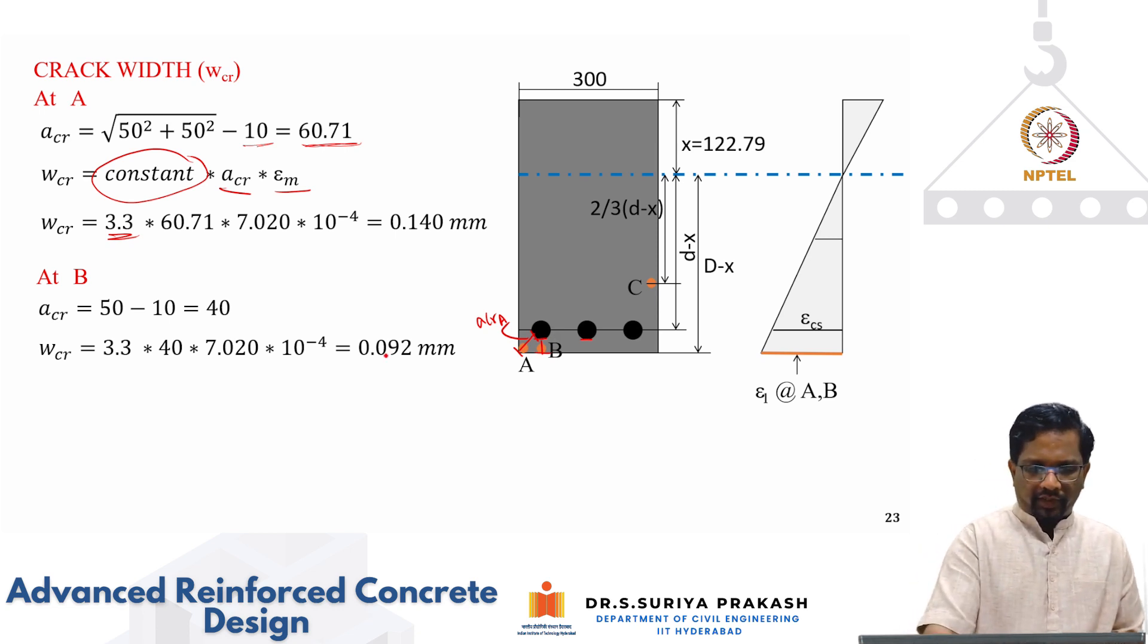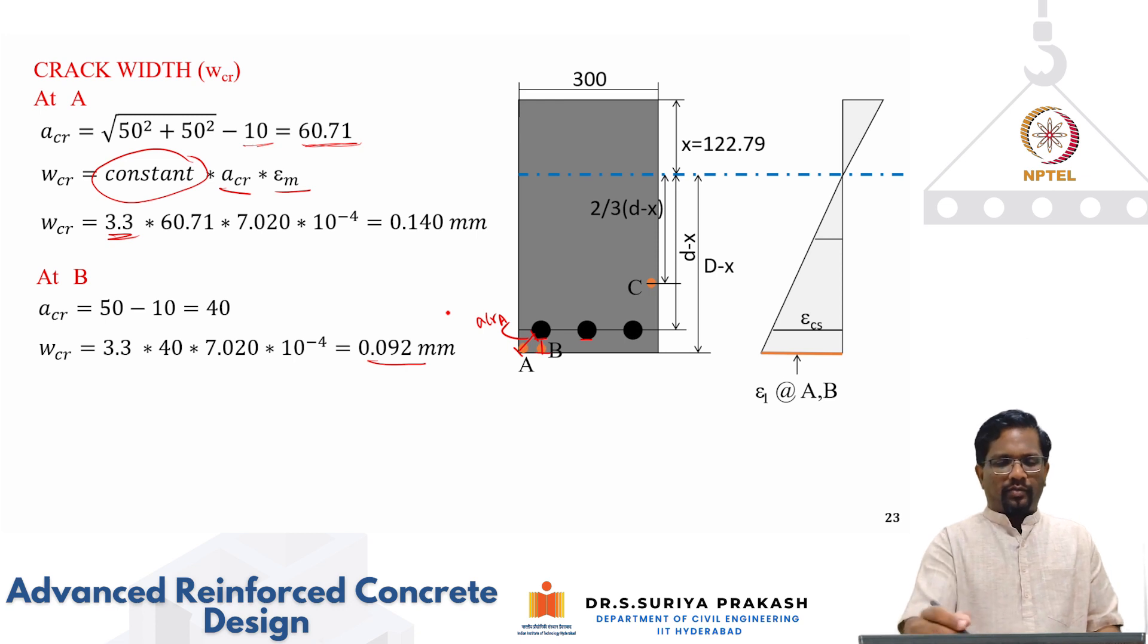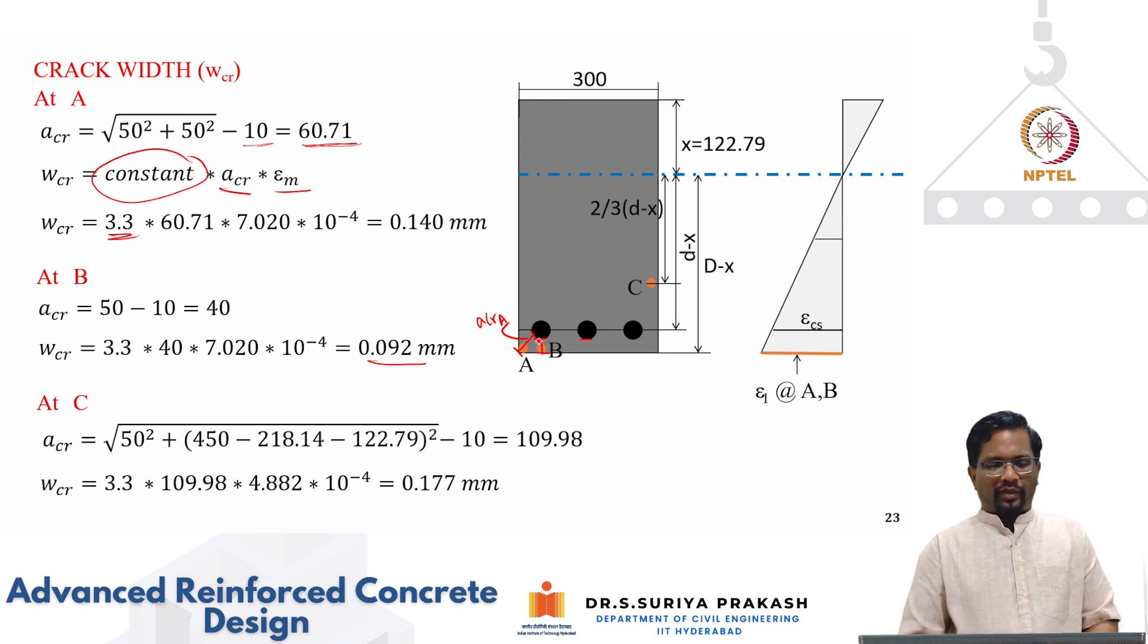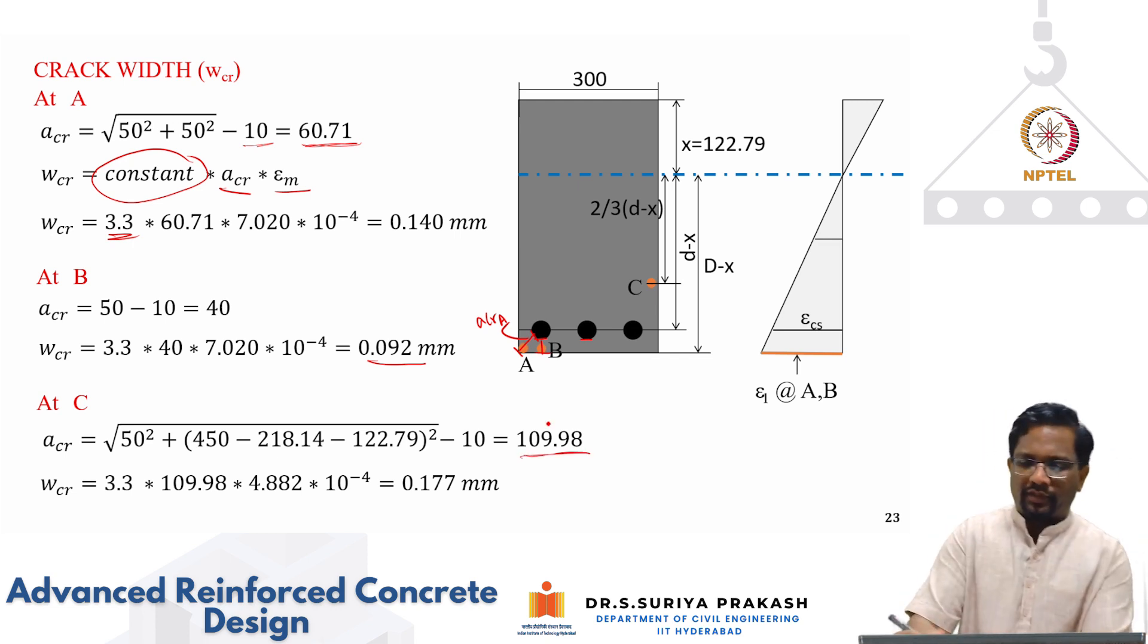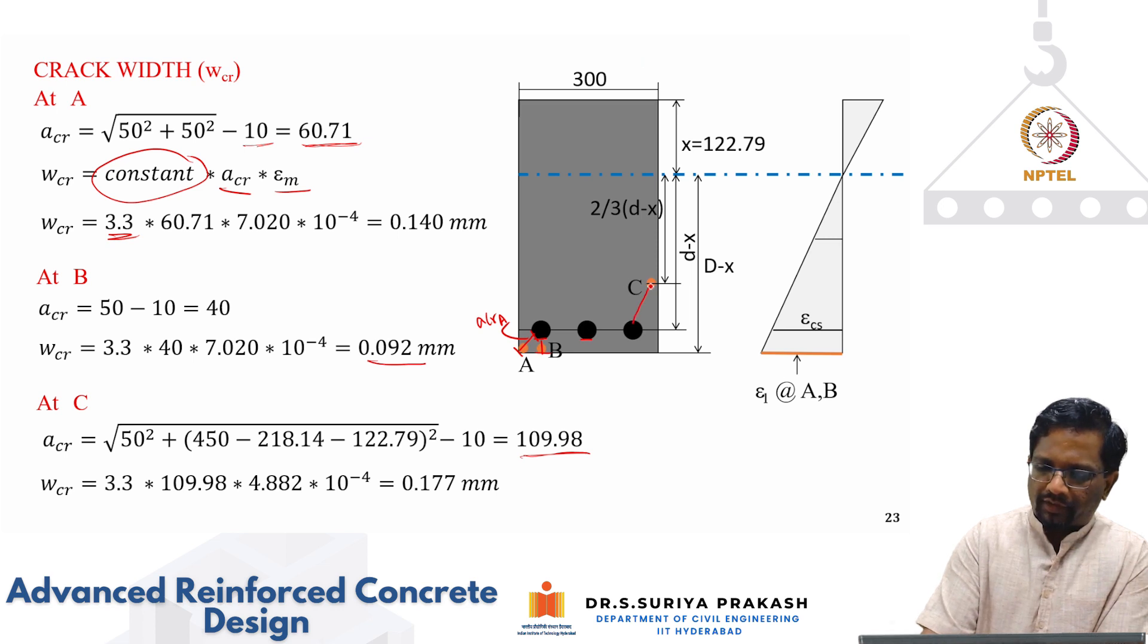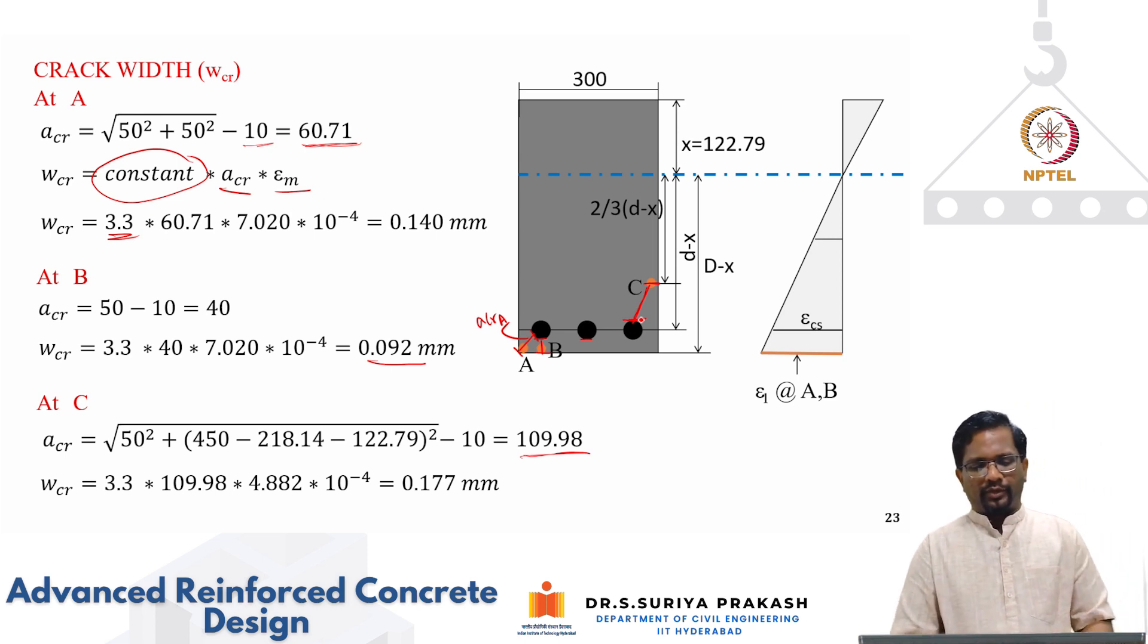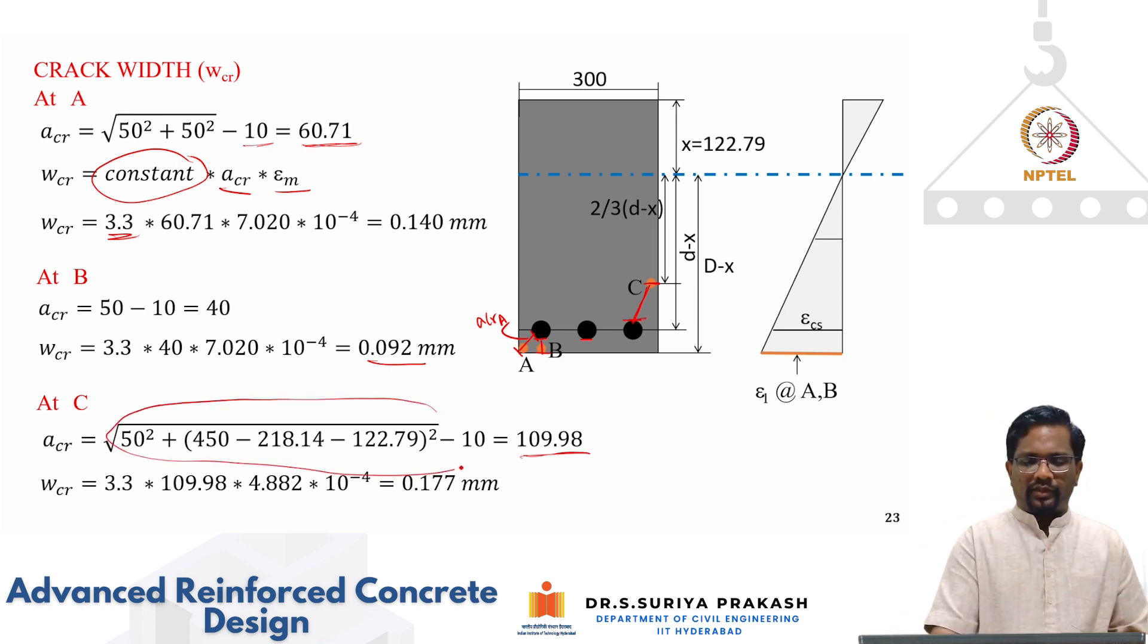At B, what is ACR? Again, it is going to be 50, your effective cover minus half the diameter because it is directly below the bar. ACR is this distance from here to here. The point that what we are considering on the outside. You see that the crack width at B is, in fact, the corner one is expected to have a higher crack width because it is having higher ACR. But the location just below the bar is having lesser crack width. Similarly at C, again, we calculate this ACR. 50 square plus this whatever the distance that you take minus 10. It works out to be 109 point because in this case, C point you take this distance. This distance is what we calculate ACR. If you substitute it, using your geometry, you get this ACR as this. And then you substitute, you get 0.177.